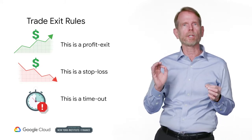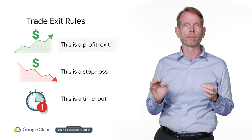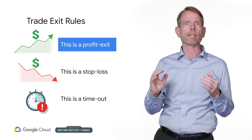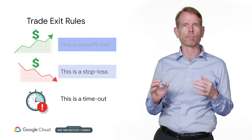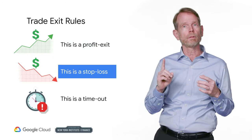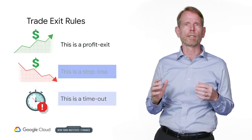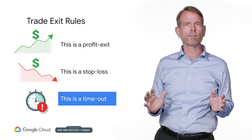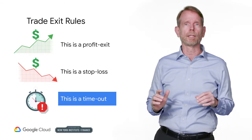You have three types of possible exits. One, you make money — this is a profit exit. Two, you lose money — this is a stop loss. Three, you run out of time — this is a timeout.